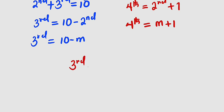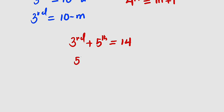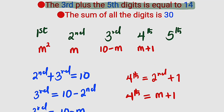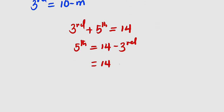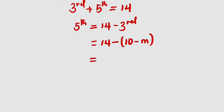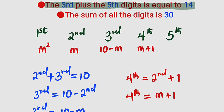The fifth digit equals 14 minus the third digit. The third digit is 10 minus m, so the fifth digit equals 14 minus (10 minus m). Expanding by distributing the negative sign: 14 minus 10 plus m equals 4 plus m. So the fifth digit is 4 plus m.